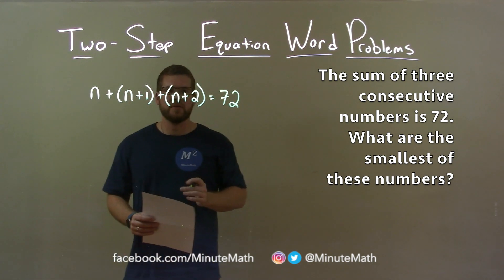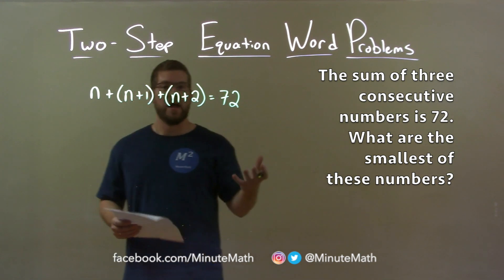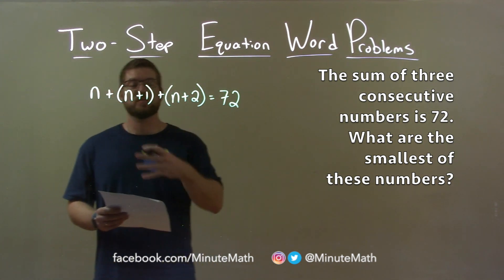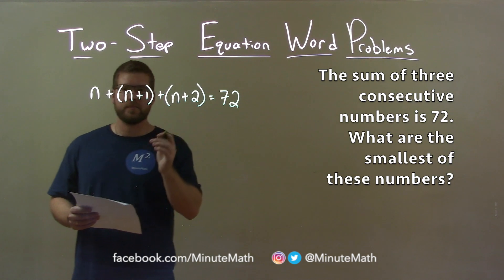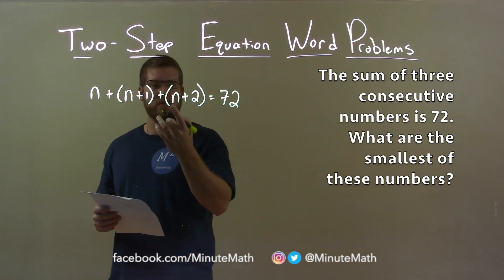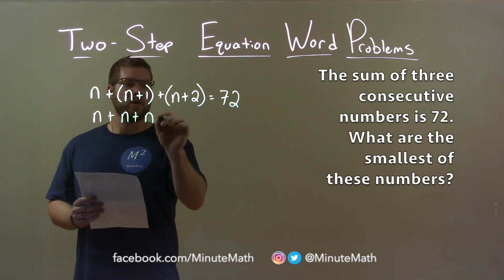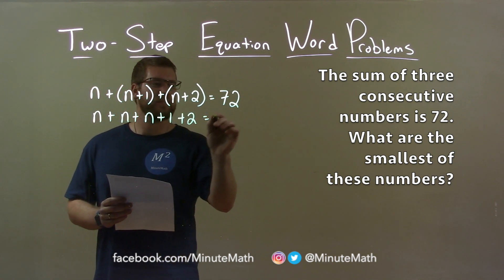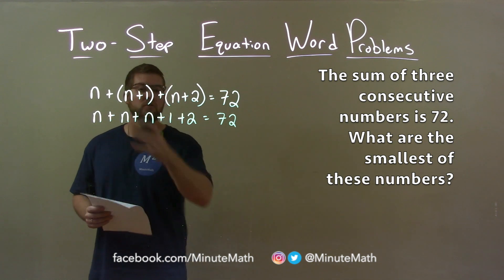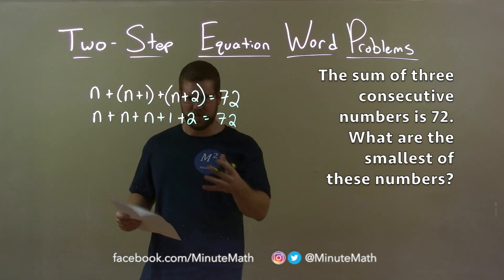Now I've created an equation, and let's see if I can simplify and solve for n. n will be our smallest of these three numbers. We have 1n plus 1n plus 1n. We can rearrange this to be n plus n plus n plus 1 plus 2, because it's all addition.